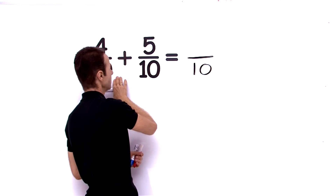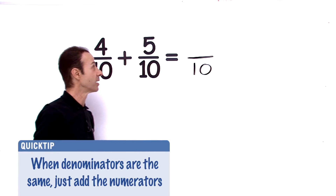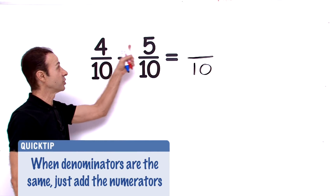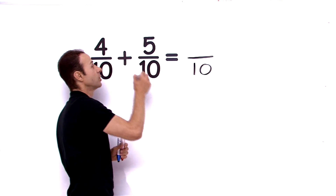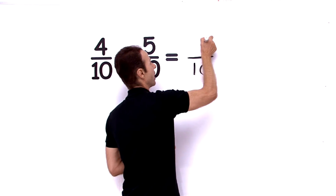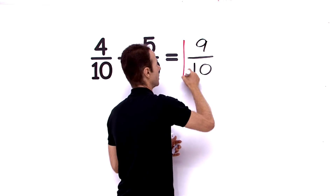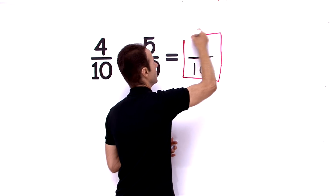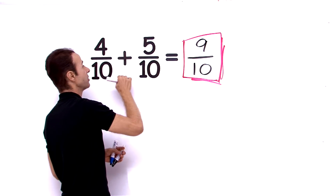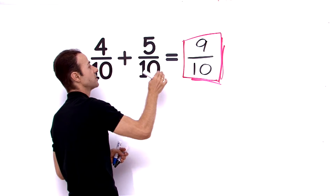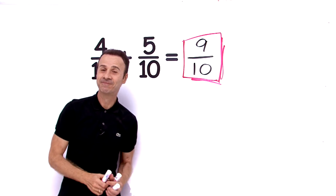That 10 just slides and slots right over there. Now all we have to do is add the numerators. 5 plus 4 is 9, so 4 tenths plus 5 tenths is 9 tenths.